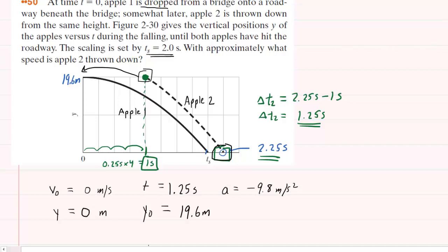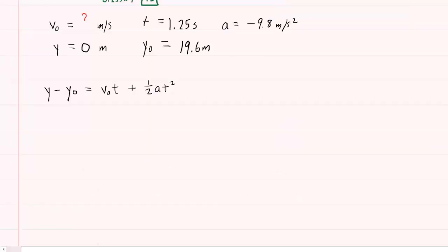We don't know the initial velocity of Apple II. That's actually what we're looking for. So that becomes our unknown. Let's take a look at the same equation from one-dimensional kinematics. And so we have that equation written down below here. We'll plug in the known information.